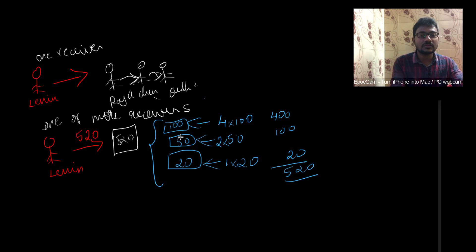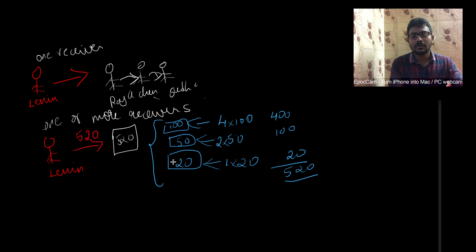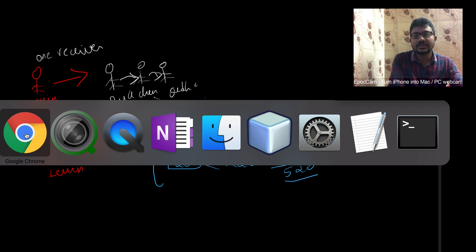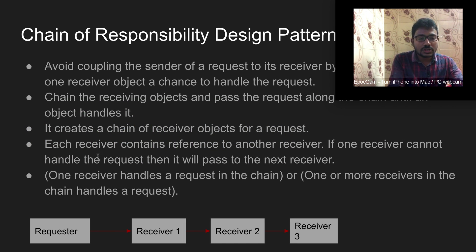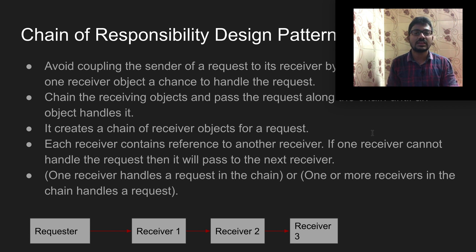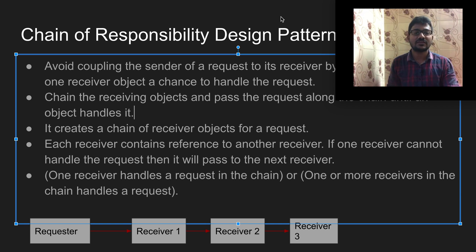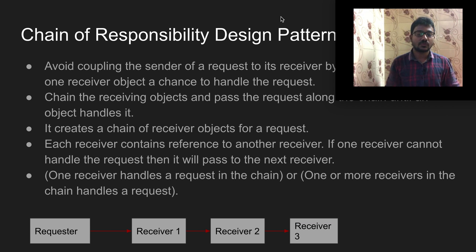In the ATM example, all three receivers are acting at the same time and communicating among themselves to give the client the best response. This is the second case where one or more receivers handle a request in a chain. That concludes the real-life examples for the chain of responsibility design pattern.